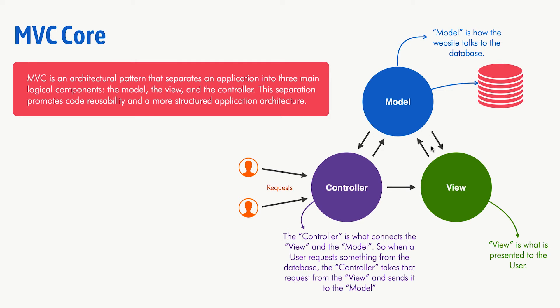What happens is the Controller is actually the one that should handle how the Model and the View communicate — it acts as the middleman. As you're going to see in a real example, you're going to understand this much better.